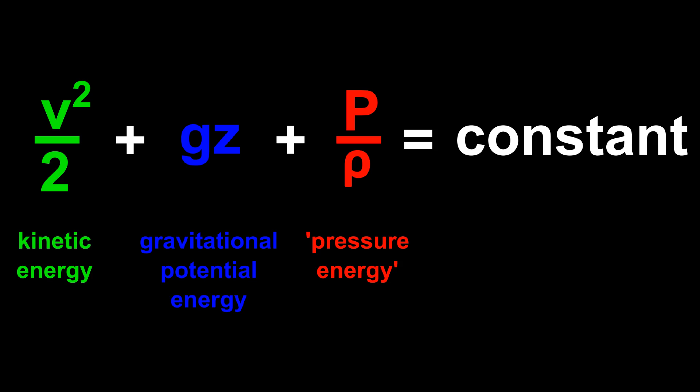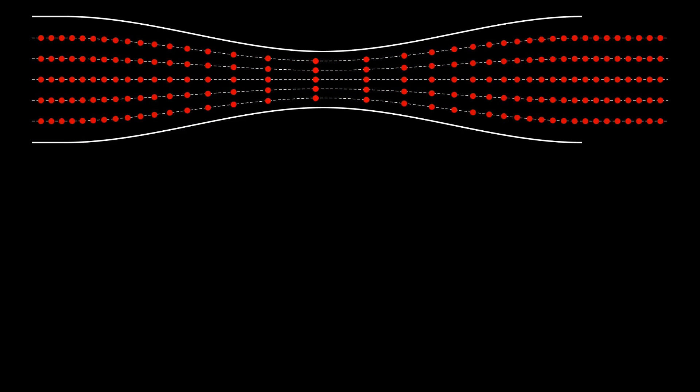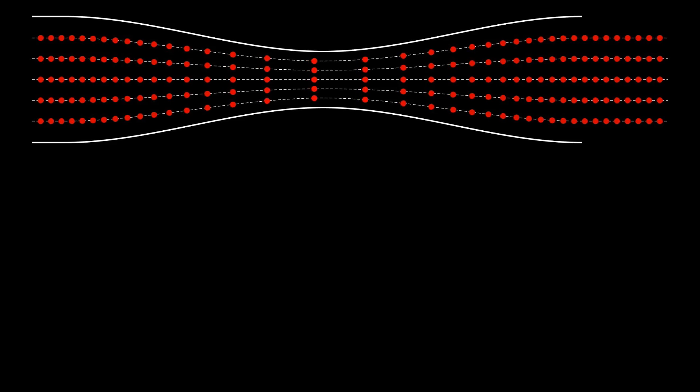This means that as the flow speeds up, its pressure drops, and vice versa. The same general idea applies here, but when we talk about compressible flows, instead of total energy, we use properties called the total pressure and total temperature. These values are the pressure and temperature the flow would have if we slowed it to a speed of zero with no losses.